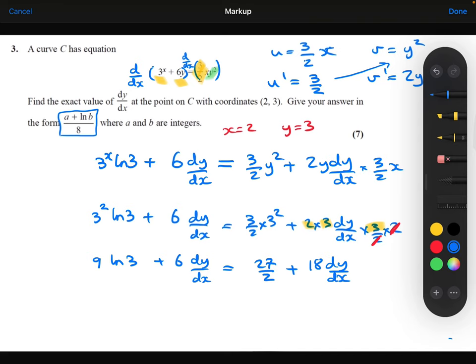Let me move the dy/dx's all onto one side here because remember, that's the value I'm trying to actually find. So we get 9·ln 3 - 27/2 = 12·dy/dx. The 18·dy/dx minus the 6·dy/dx is 12·dy/dx.